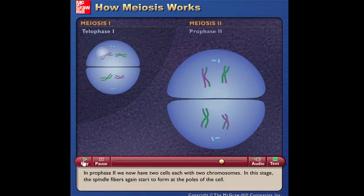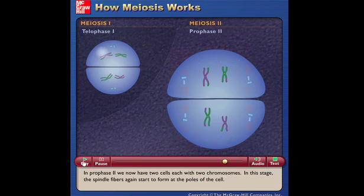In prophase II, we now have two cells, each with two chromosomes. In this stage, the spindle fibers again start to form at the poles of the cell.